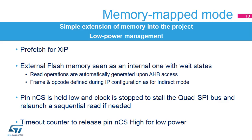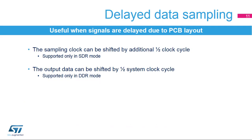This mode also supports SIOO mode, or send instruction only once, supported by certain flash memories, which allows the controller to send an instruction only once and to remove the instruction phase for following accesses. Delayed data sampling allows users to compensate for the delay of signals due to constraints on the PCB layout optimization. It allows applications to shift the data sampling time by an additional one-half clock cycle when operating in SDR mode. In DDR mode, the output data can be shifted by one-half system clock cycle to relax hold constraints.